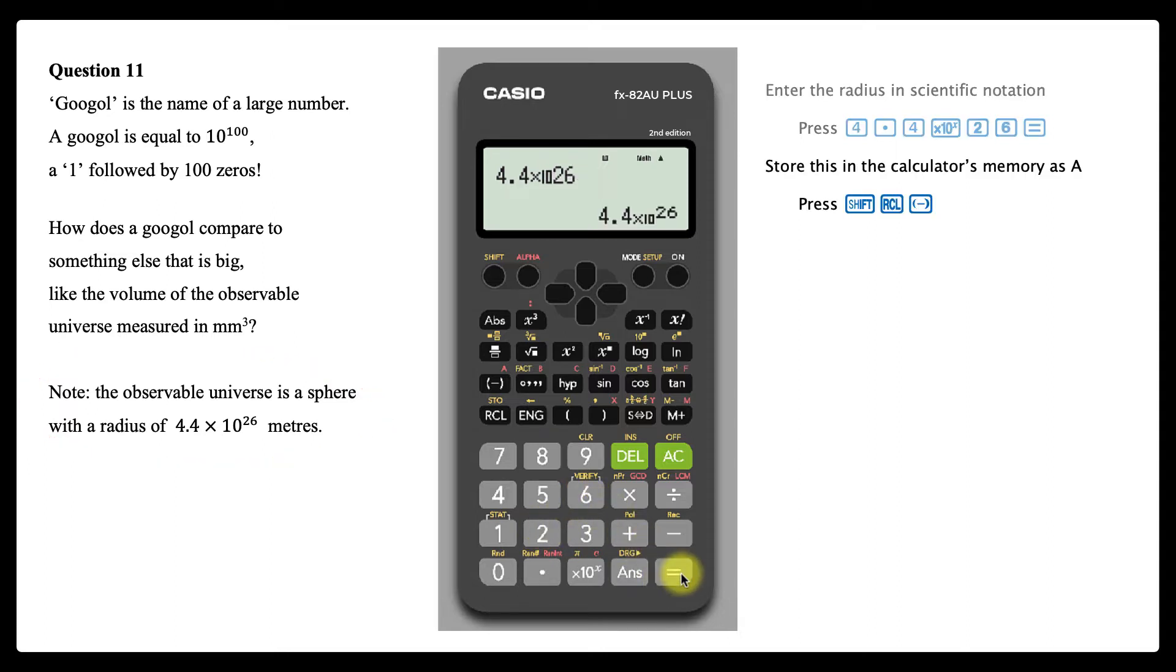To store this value as A in the calculator's memory, press shift and then the recall key, then choose the negative key as it corresponds to the red letter A.